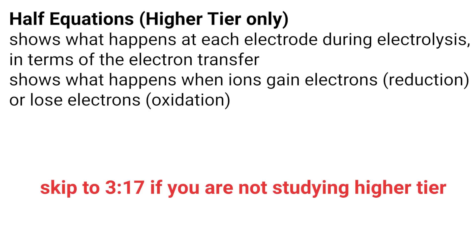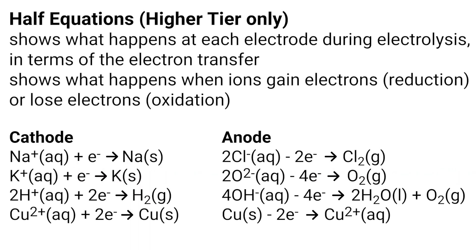Those doing the higher tier need to be able to write half equations to explain what is going on at each electrode. On the screen now are the half equations for both the cathode and the anode. You may be required to write half equations for group 1 metals, hydrogen, some transition metals, or for the production of group 7 halogen gases, or for the production of oxygen. Each half equation shows what is going on in terms of electrons. We know that there are ions present in solution, and when they approach an electrode, they either gain electrons or lose electrons. The ions that gain electrons are said to be reduced, and the ions that lose electrons are oxidised.